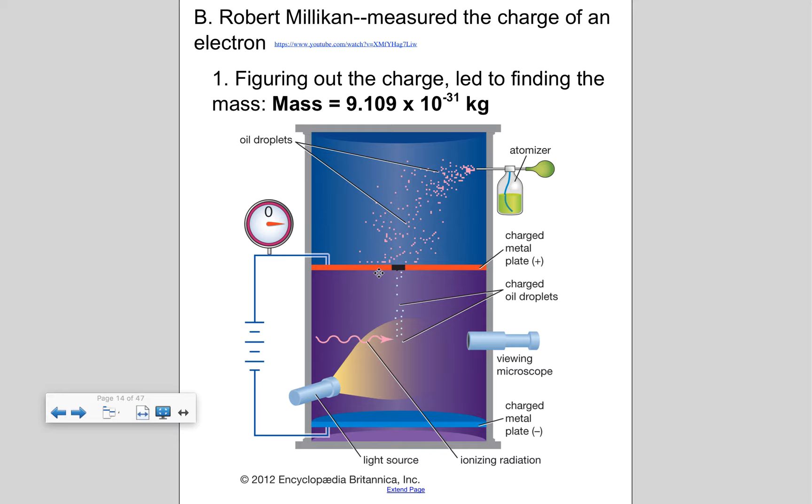And figuring out the charge of it actually led to figuring out the mass of an electron and both the charge and the mass of an electron are extremely small. The charge of an electron just says minus one. But the mass of an electron is really small, 9.109 times 10 to the negative 31 kilograms.